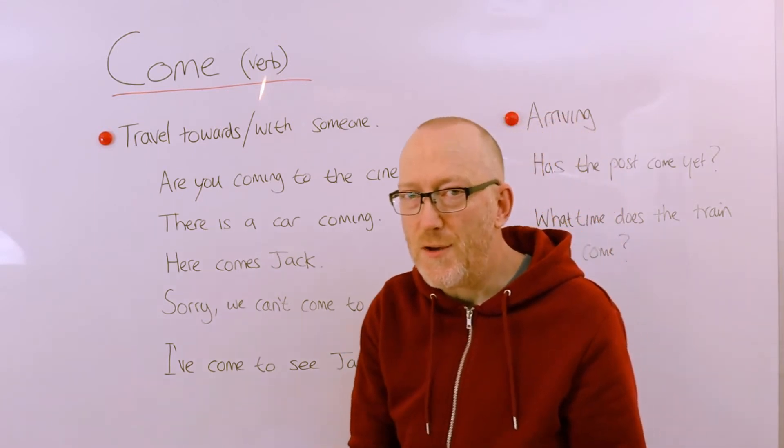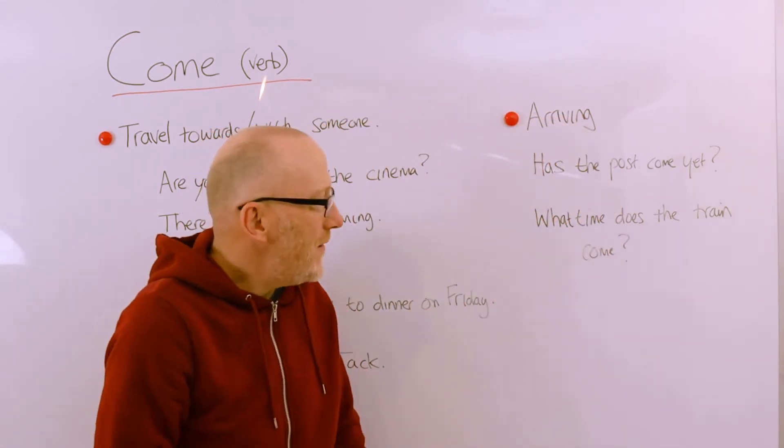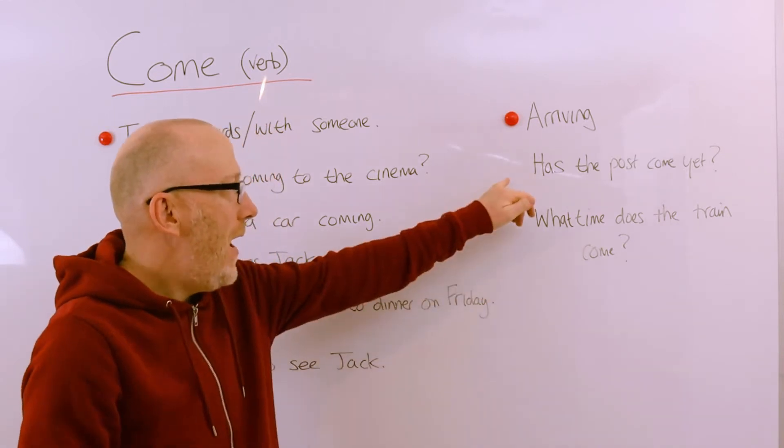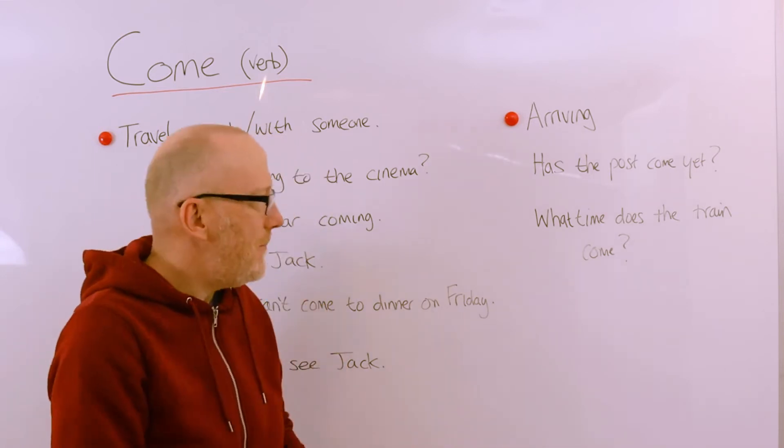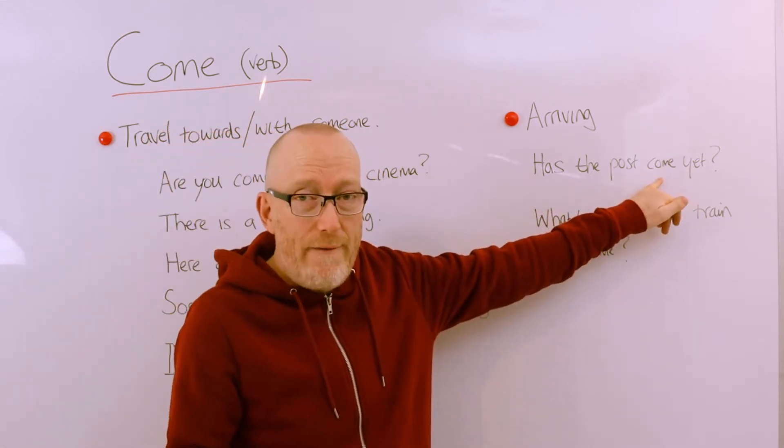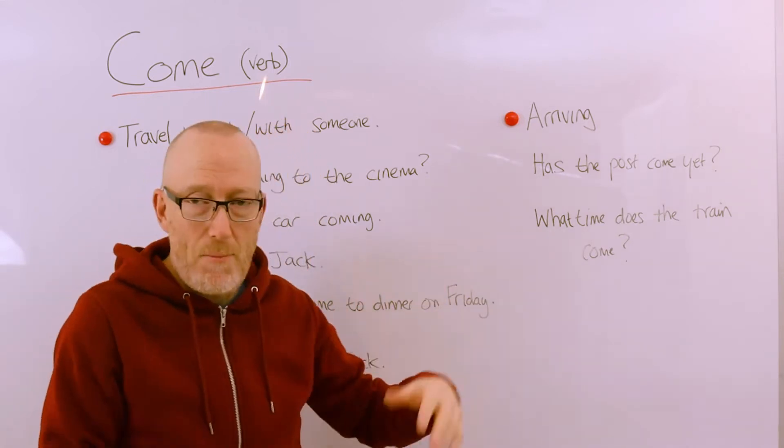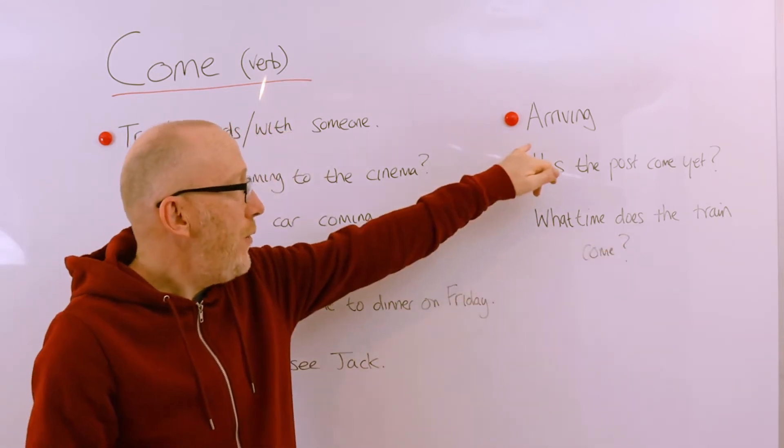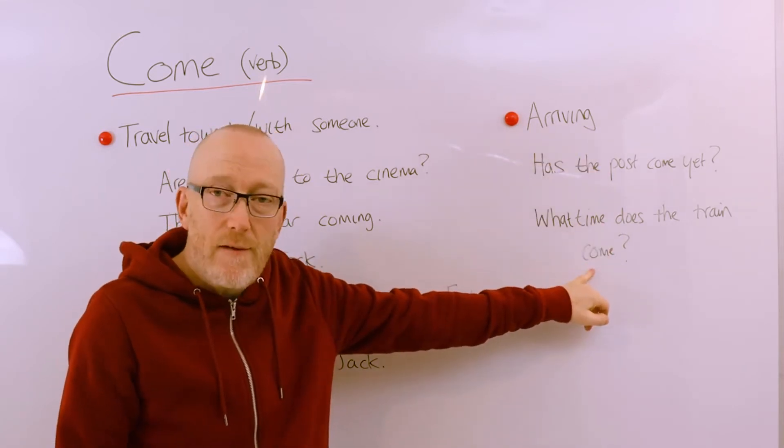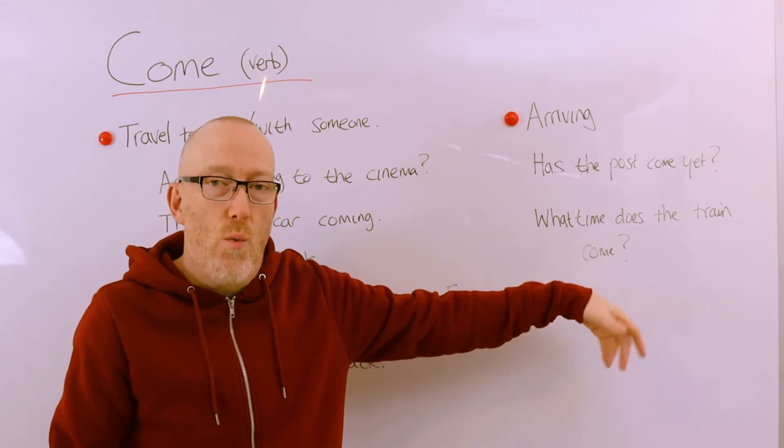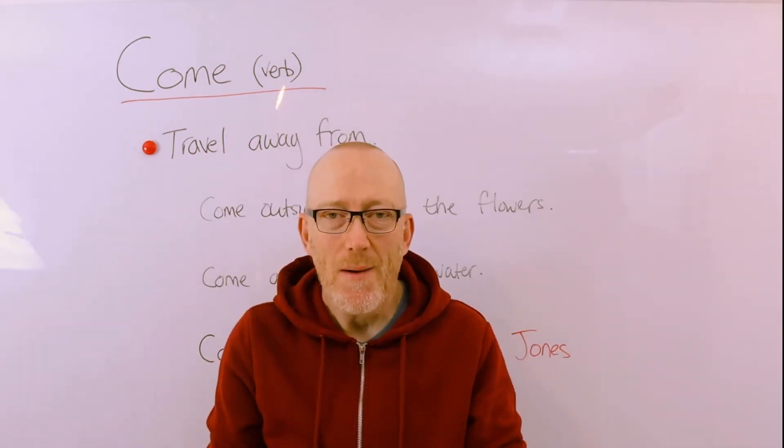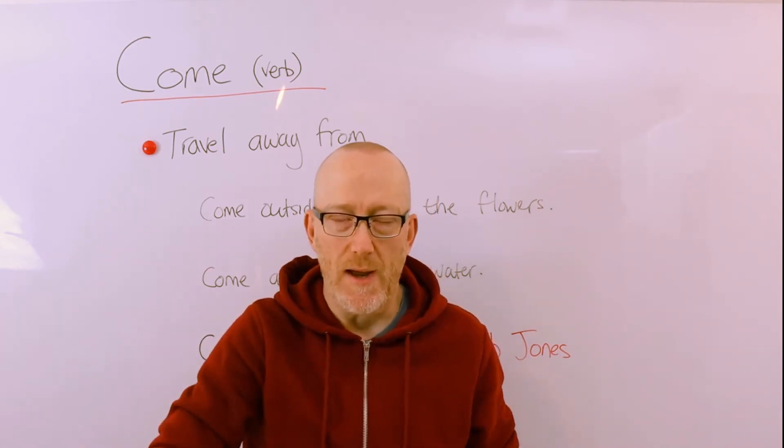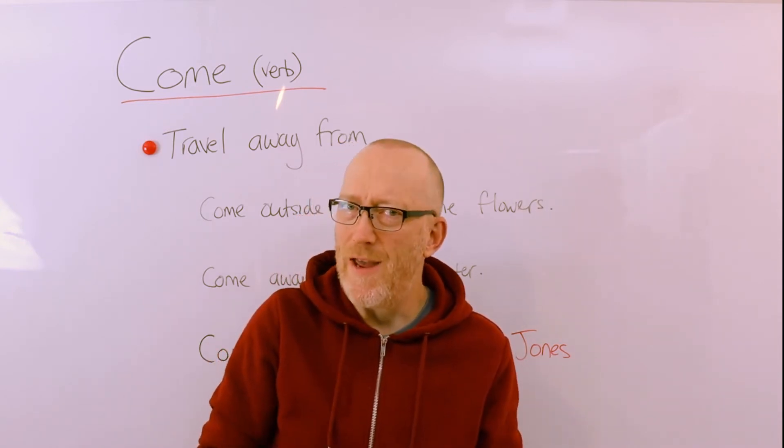But that's not all. We also use come when we arrive at a place. For example, has the post come yet, as opposed to arrived yet, or we can simply replace arrive with come. Has the post come yet? And to make it much more natural, a much more colloquial way, what time does the train come? So you can see that the verb arrive can be replaced with the verb come in a more natural way to express these kinds of issues. Now in the same way that we use this verb come to talk about travel towards something, we can actually use the same verb to talk about travel away from something.